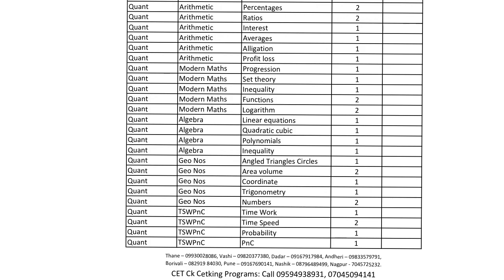Topic number one in the list is AP/GP progression series — one question every year. If not in CAT, then definitely in SNAP, NMAT, CMAT, IIFT, or other exams. AP/GP progression, set theory — one question every year. Inequalities — one question every year. Functions/graphs — two questions every year. Logarithm — two questions every year.